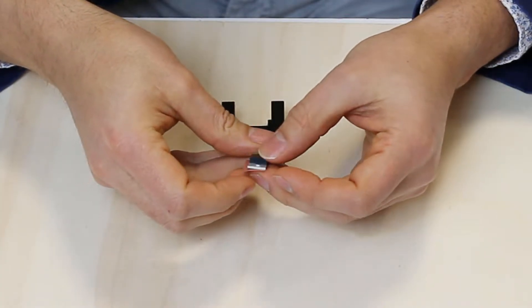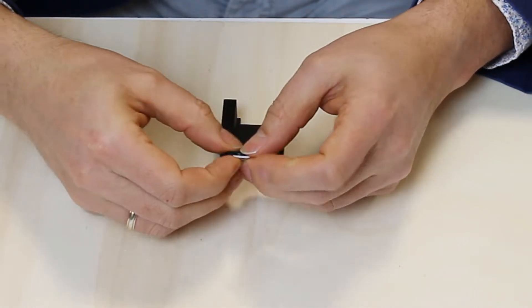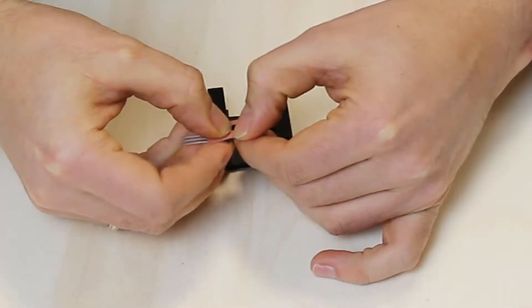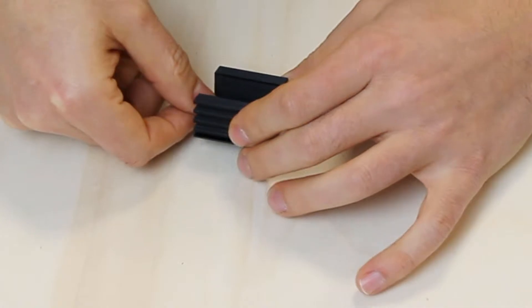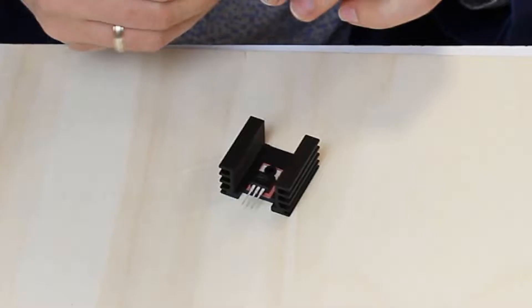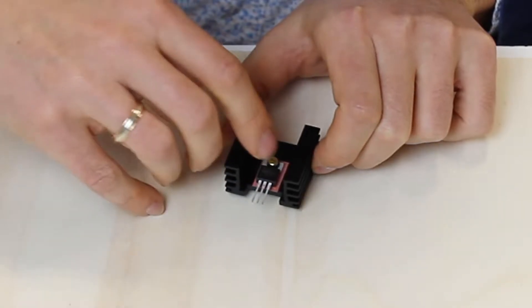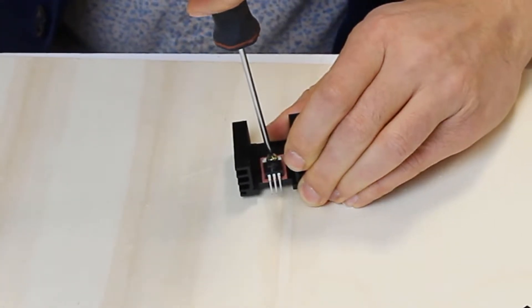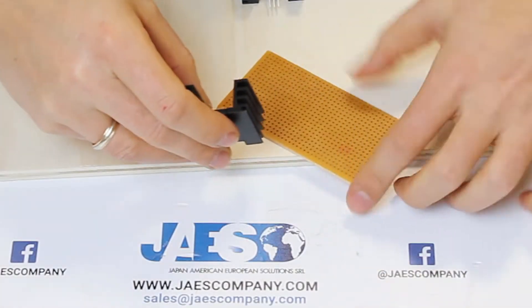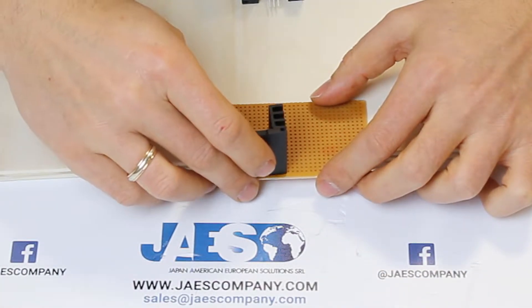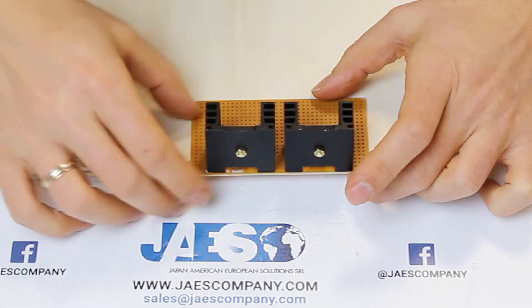Now we mount the transistors with screws and isolating bushing on the heat sink. Do not forget to put the heat conducting insulation. We place the two heat sinks with the transistors on the board in this way.